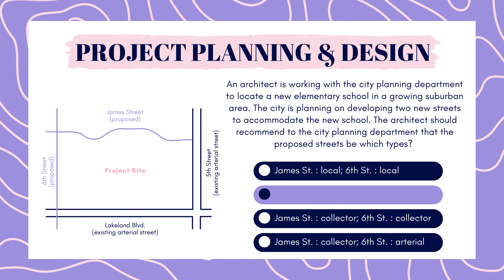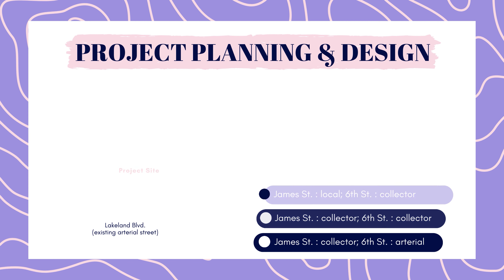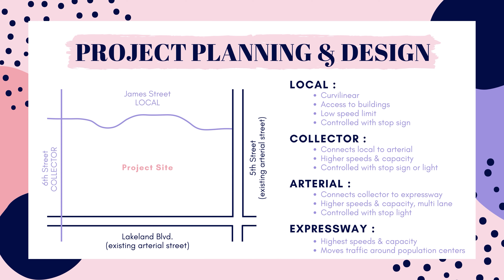The correct answer is James Street as local and 6th Street as collector. The best street type to access sites or buildings is from local streets. These streets are typically curvilinear, have a lower capacity, and the speed limit is lowest, allowing cars to slow down and turn into the property. Collector streets have a higher capacity and are not typically used for through traffic — your destination is accessed by the collector street. Collector streets connect local streets to arterial streets. When collector streets connect to local streets, a stop sign is used at the intersection; when they connect to arterial streets, a stoplight is used. Since 6th Street is connecting an arterial street to a local street, it should be proposed as a collector street.